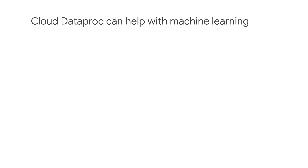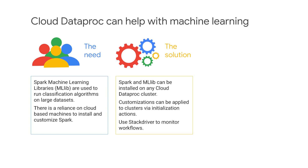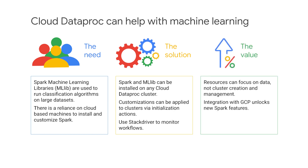The third use case looks at how Cloud Dataproc can help with machine learning. A customer uses Spark machine learning libraries to run classification algorithms on very large datasets, relying on cloud-based machines where they install and customize Spark. Because Spark and machine learning libraries can be installed on any Cloud Dataproc cluster, the customer can save time by quickly creating clusters. Additional customization can be applied easily to the entire cluster through initialization actions. Workflows can be monitored with built-in cloud logging and monitoring. Resources can be focused on the data with Cloud Dataproc, not spent on cluster creation and management.